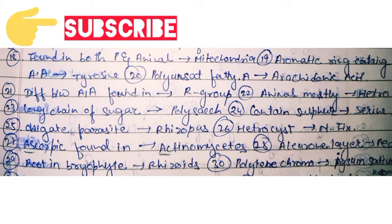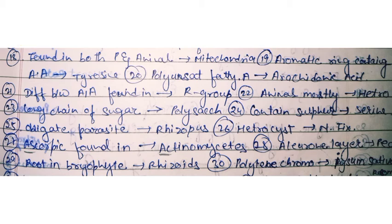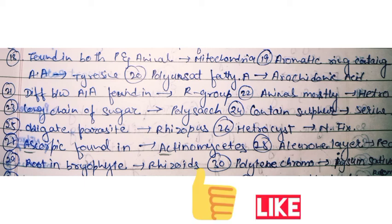The aleurone layer is present in the endosperm of seeds. In bryophytes, roots are found in the form of rhizoids. Last but not least, the polytene chromosome is found in Pisum sativum. Thank you — if this is useful, please like and subscribe.